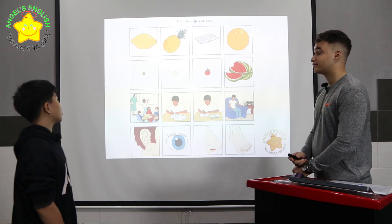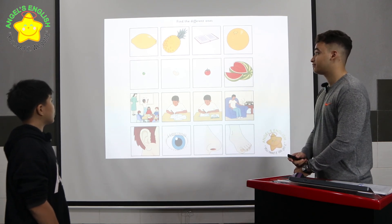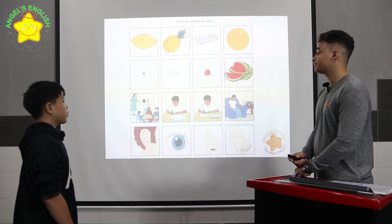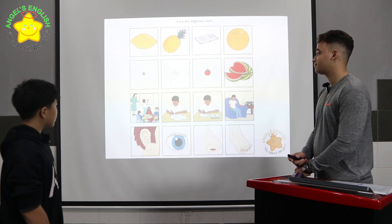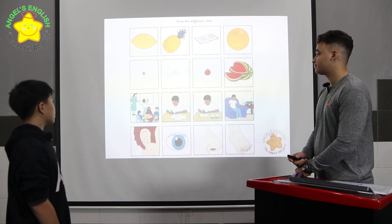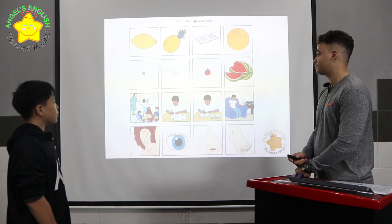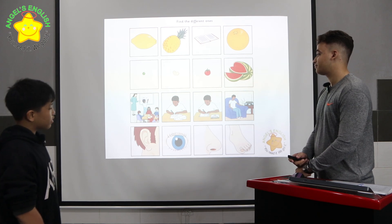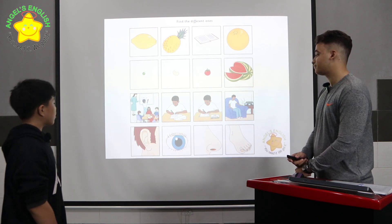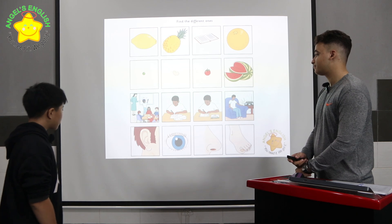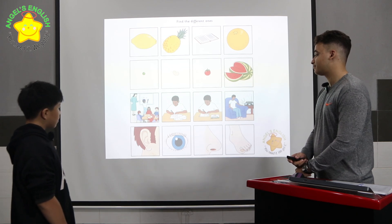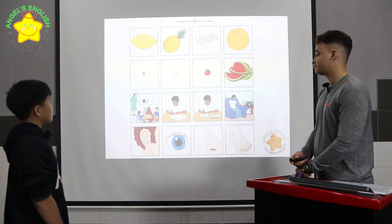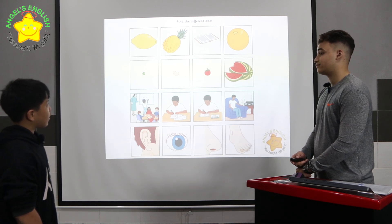In picture four, it's different because a bean and a tomato are vegetables. In picture four, it's different because picture one, picture two, and picture three, it's reading. In picture four, it's different because it's the ear, the eye, and the ear.